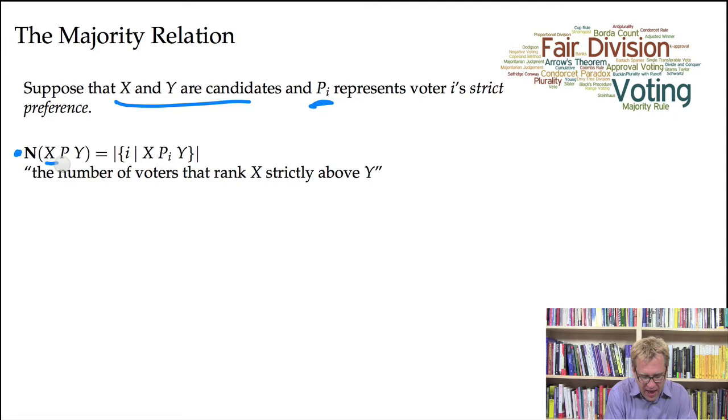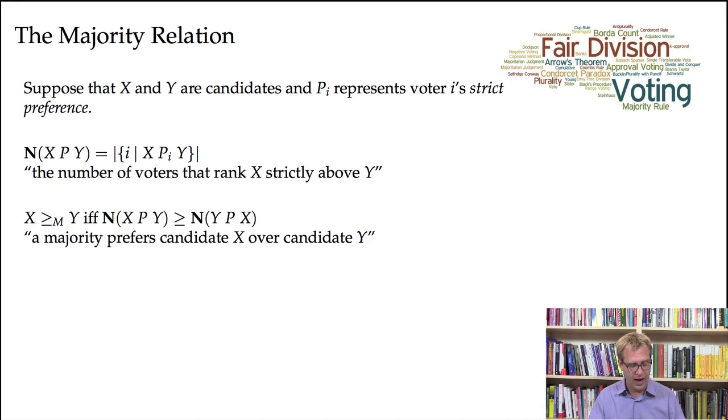So to give ourselves some notation to express this, suppose that X and Y are two candidates, and P sub I represents voter I's strict preference. Then I'm going to write this boldface N of X P Y, just in case the number of individuals. I'm going to let N of X P Y stand for the number of voters that rank X strictly above Y. So these absolute value signs here, these bars stand for the number of elements in this set. So this is the set of all voters that rank X strictly above Y, and the bars around it mean count the number of elements in this set.